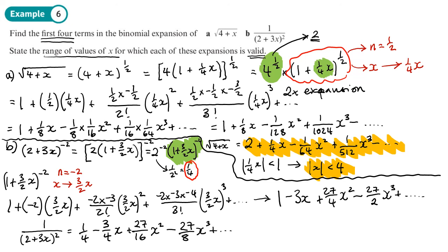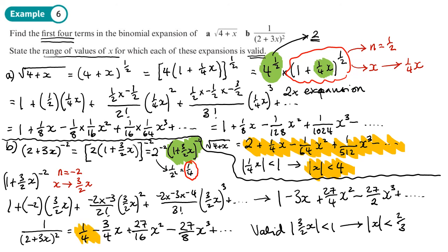So the expansion is valid when |x| < 2/3. Let's highlight the expansion and highlight when it's valid.